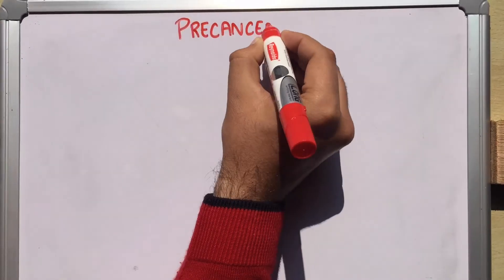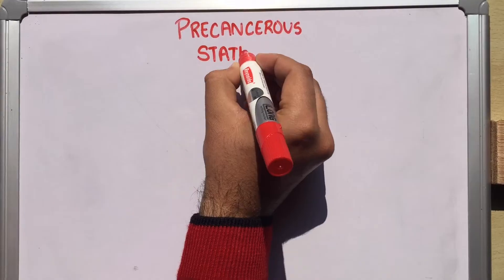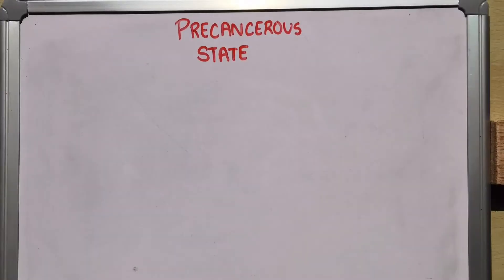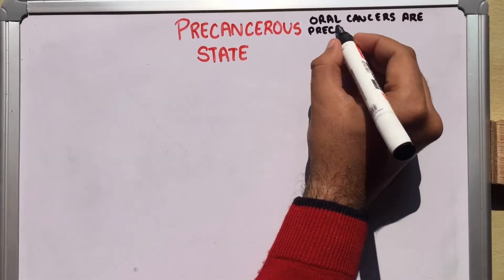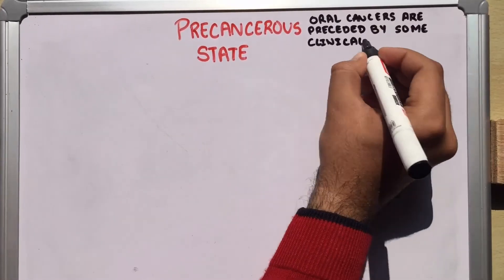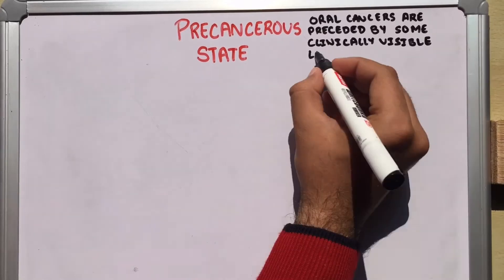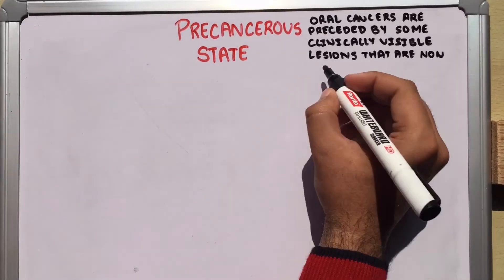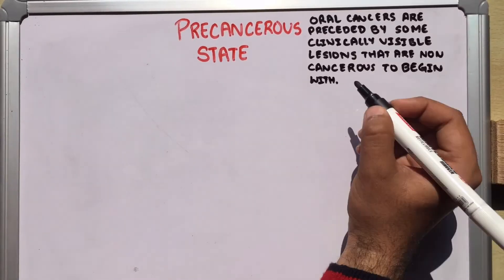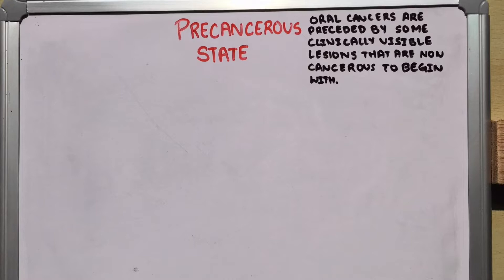Today we are going to discuss about the precancerous state. The term precancerous is used because oral cancers are sometimes preceded by clinically visible lesions which are non-cancerous to begin with. However, it is widely understood that neither do all the precancerous lesions progress to cancer, nor do all cancers necessarily originate from such lesions.